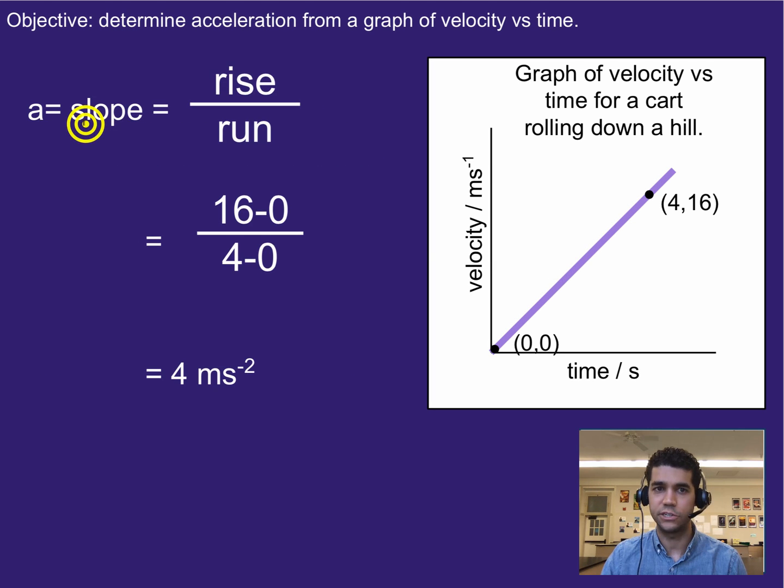So here in this case, the acceleration again equals the slope. Rise would be a change in velocity. Change in velocity is 4—or sorry, 16 in this case. The run would be the change in time. It took 4 seconds for the velocity to go up to 16, which gives us an acceleration of 4 meters per second squared.